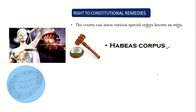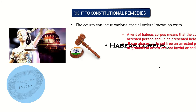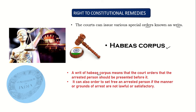What is habeas corpus? A writ of habeas corpus means that the court orders that an arrested person should be presented before the court. It can also order to set free an arrested person if the manner or the grounds of arrest are not lawfully satisfactory. Habeas corpus deals with court orders about arresting an individual — if a person is already arrested, they need to be produced before the court.